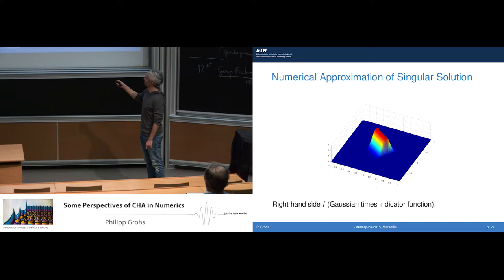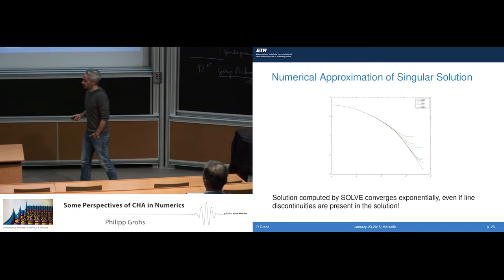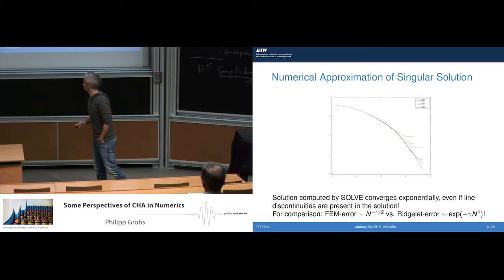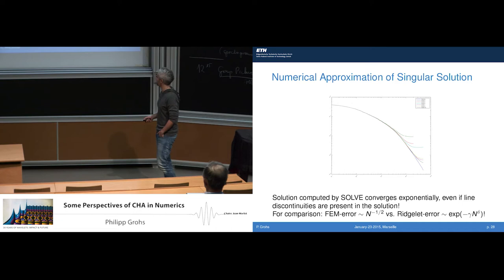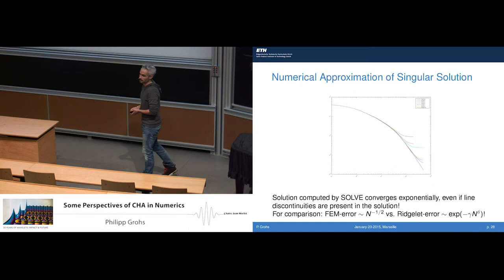Let's look at one instructive numerical experiment. We solve this transport equation with a discontinuous right-hand side, so the solution also has a line discontinuity. What we see in our algorithm is that the solution computed using this ridgelet discretization converges exponentially to the solution, even though there is a discontinuity. This is in sharp contrast to finite elements, which give something like n^{-1/2}, whereas with ridgelets we get something like exp(-γ n^δ), which is orders of magnitude better from an asymptotic point of view.